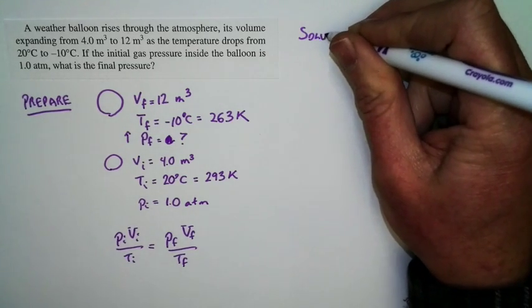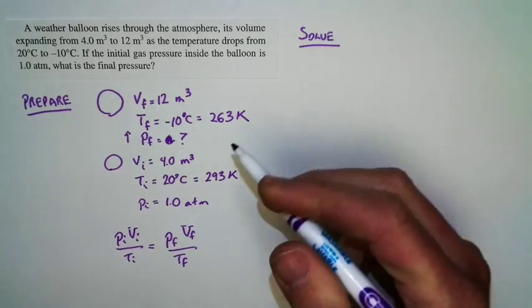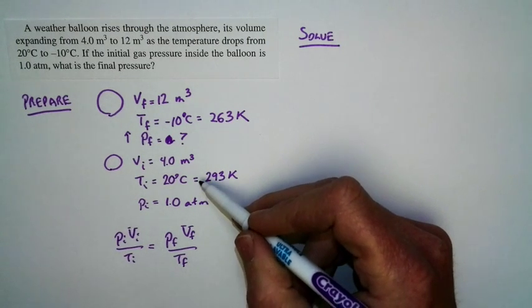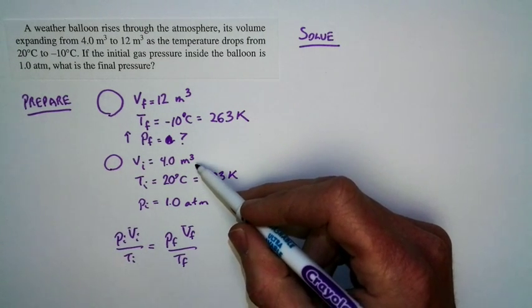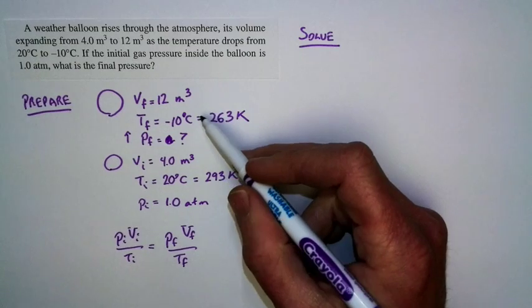So the solution is pretty straightforward. We know the initial pressure. We know the initial temperature. We know the initial volume. We know the final volume. We know the final temperature.